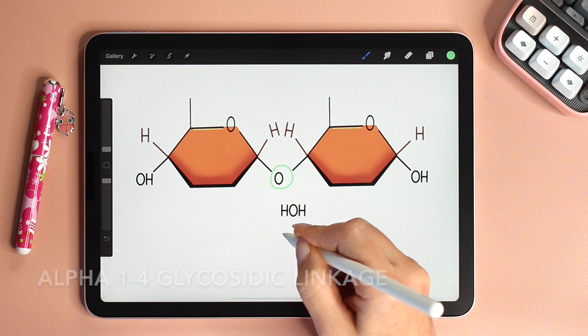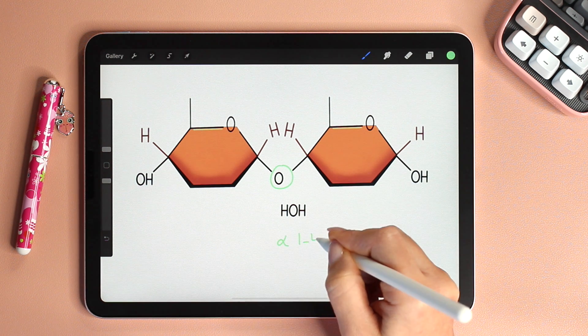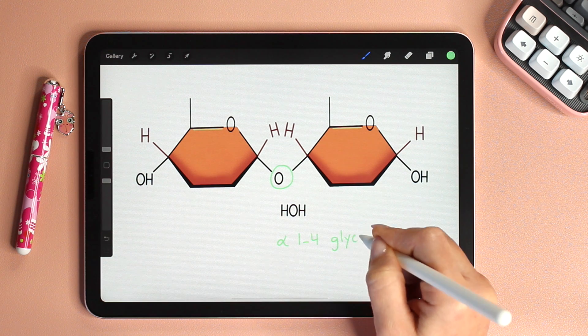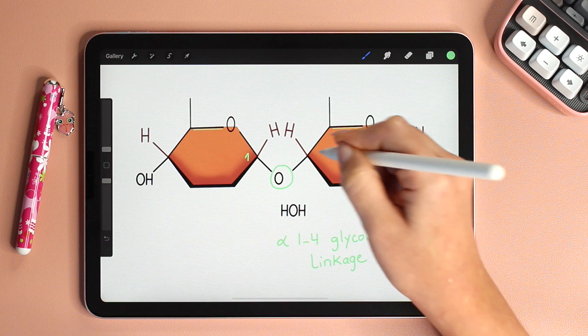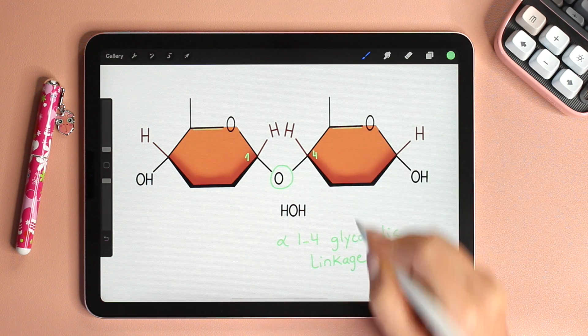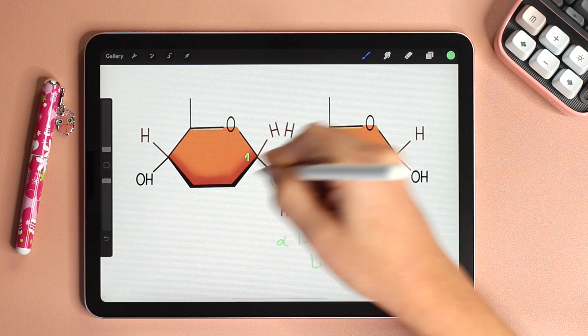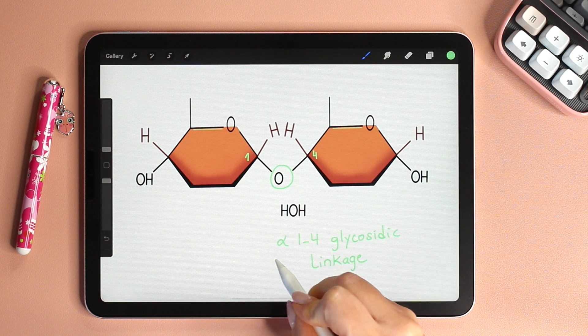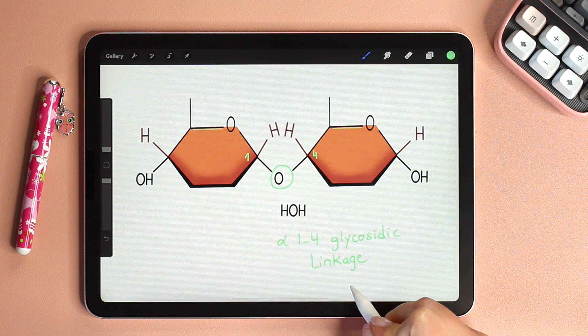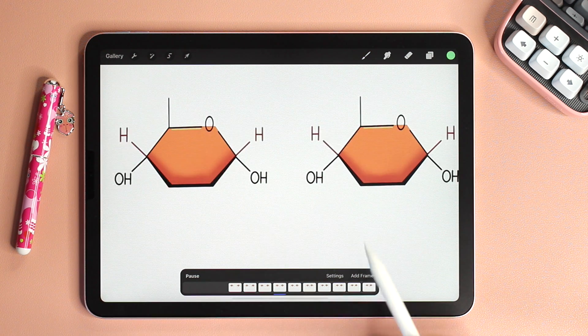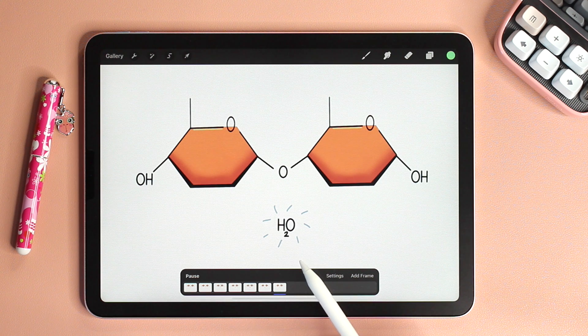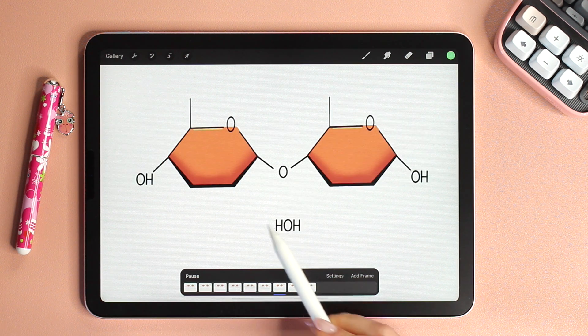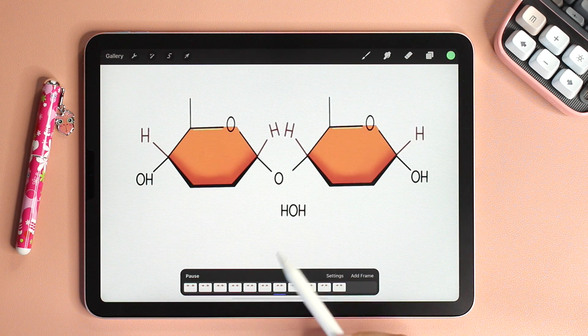To be exact we call this an alpha 1,4 glycosidic linkage. Why? Because carbon number 1 has bonded to carbon number 4 of the next sugar and the type of sugar is alpha hence alpha 1,4 glycosidic linkage. And here is the condensation reaction in action. The two monomers condense, water is released and a glycosidic bond is formed.